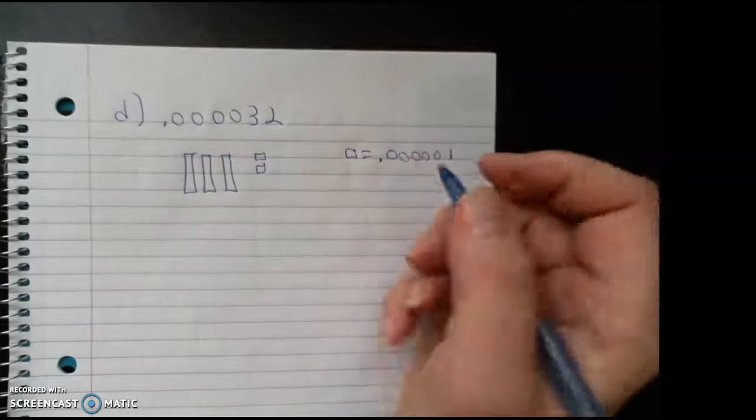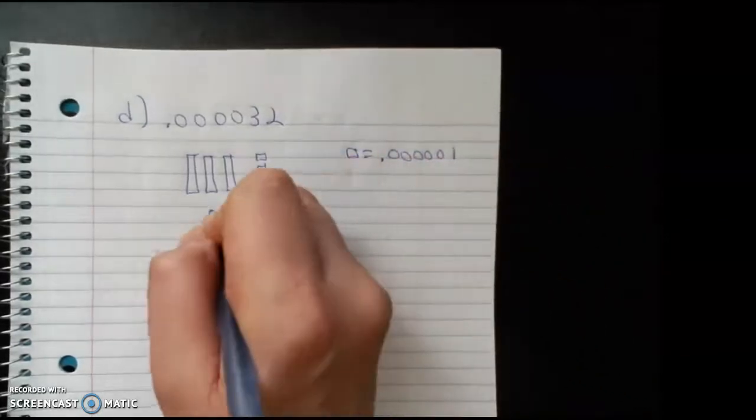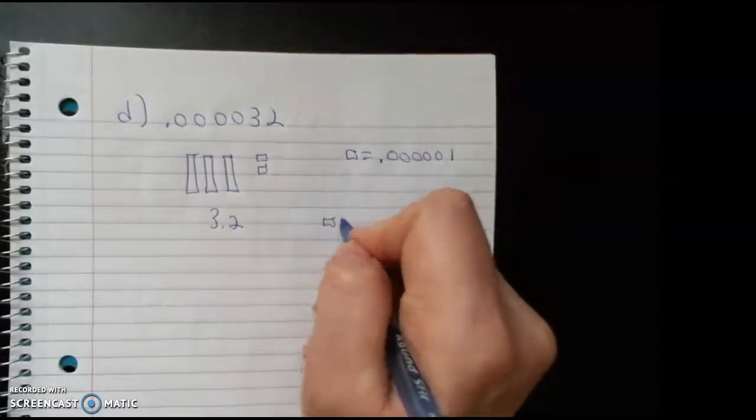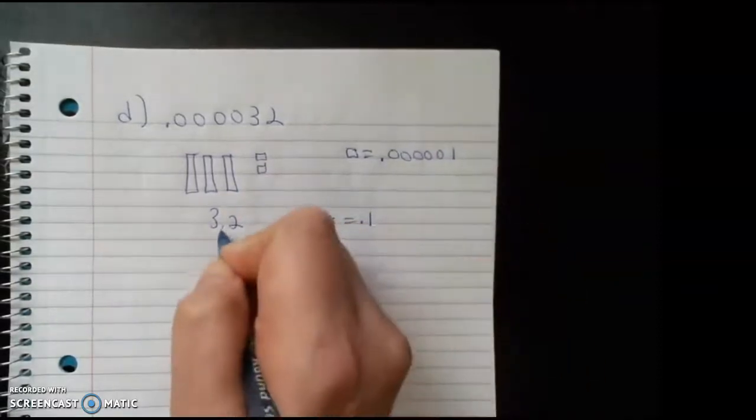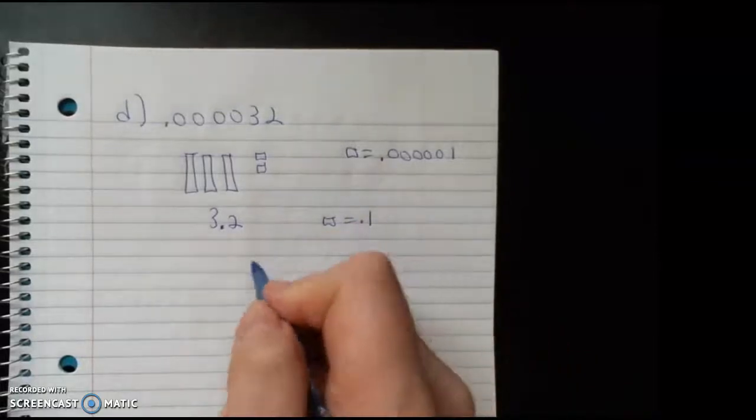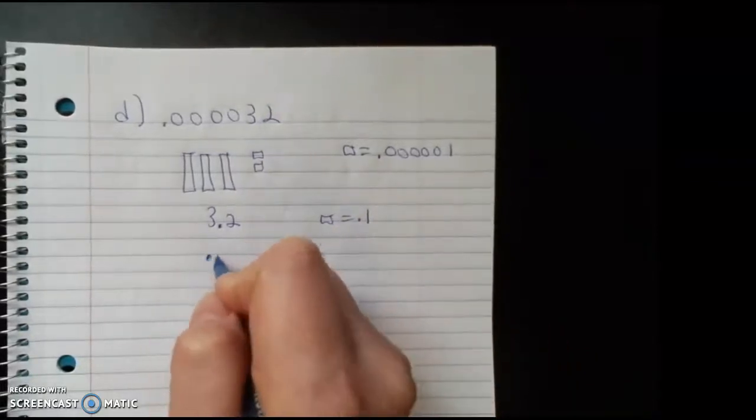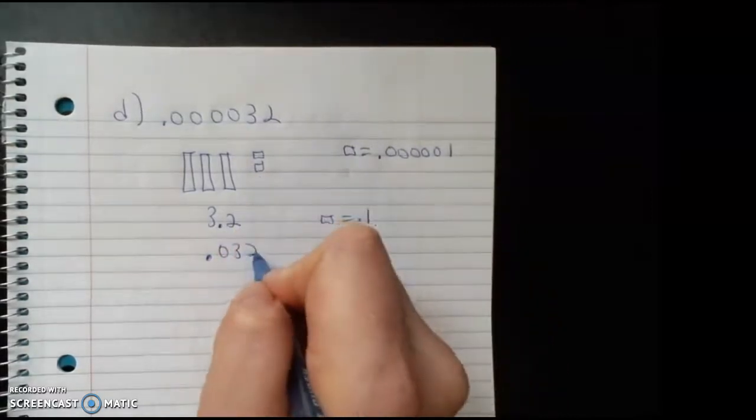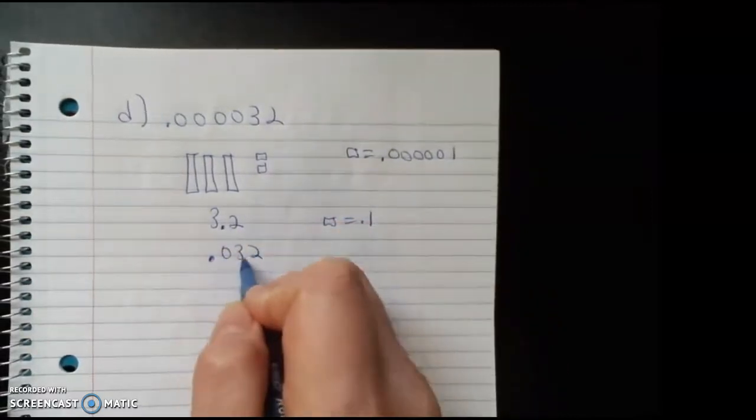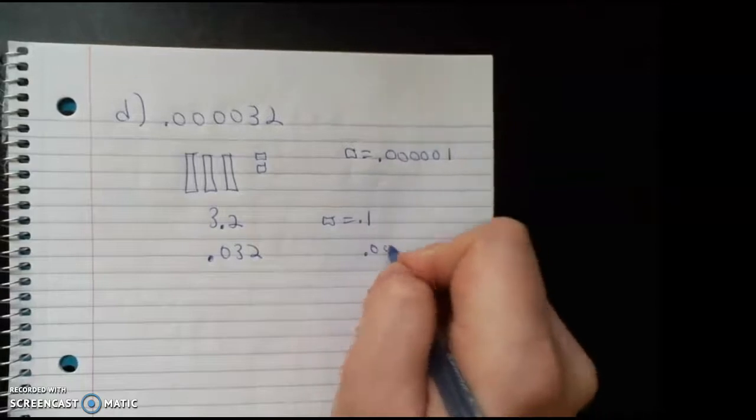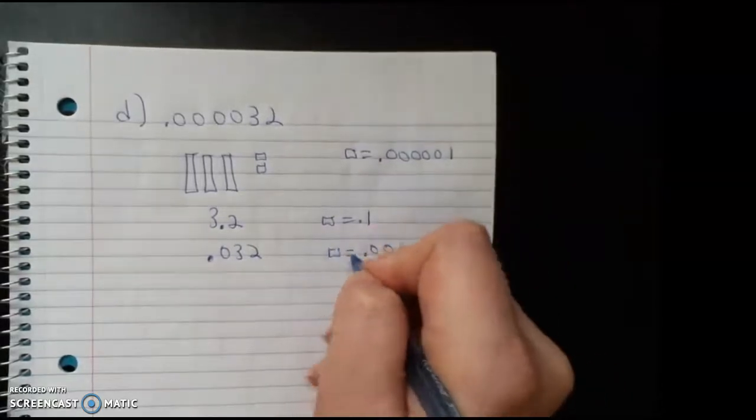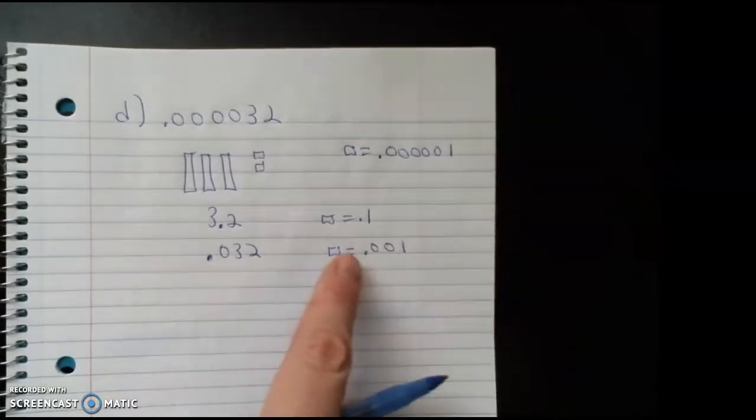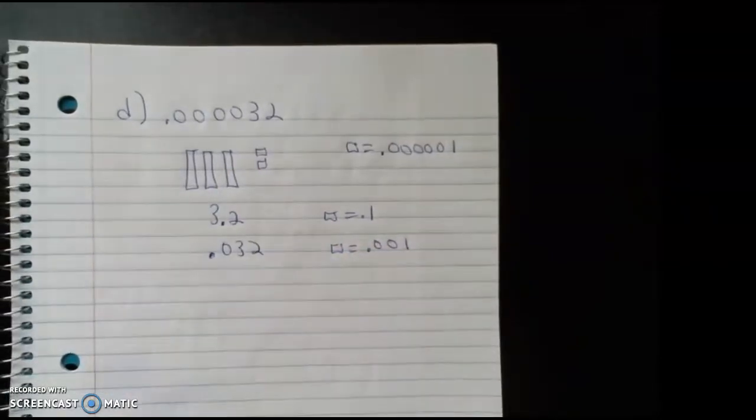And so then that is suddenly equal to that decimal. Now, what other decimal could it be? Well, this could be 3.2. If my singles are worth a tenth, that would work. I could also have it be worth 0.032. Again, my small place by 0.001. So if that is worth a thousandth, then I'd have 32 thousandths, if that takes on that value.